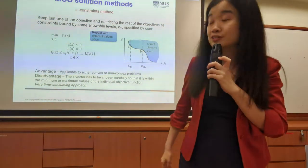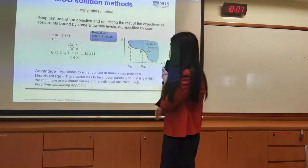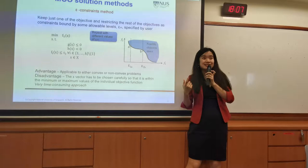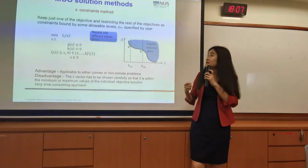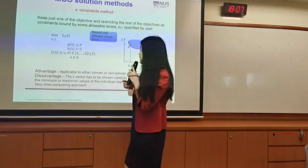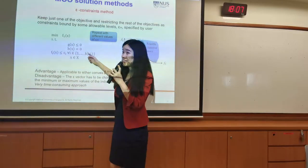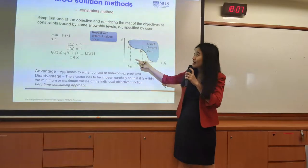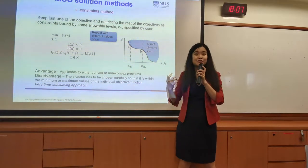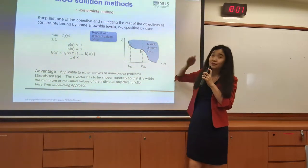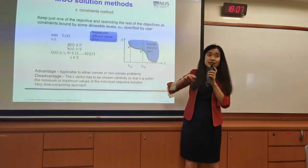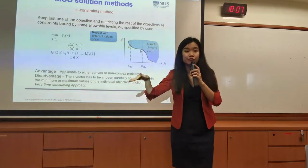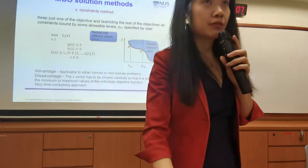For the epsilon-constrained method, you also need to repeat with different values of epsilon-m. It's not just setting one fixed solution. You need to put the other objectives in the constraints, name one in the objective, then choose epsilon-m and repeat with different values. A loop plot will capture each iteration, get the results plotted, and give you the Pareto front of optimal solutions.